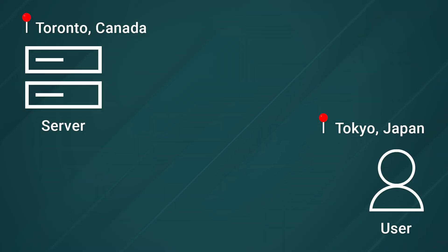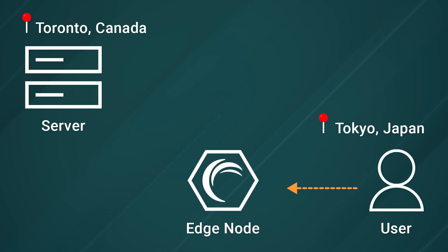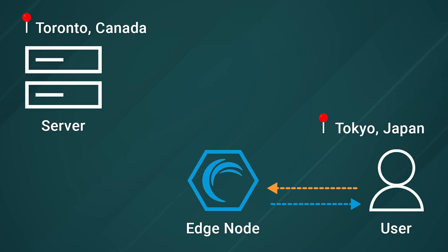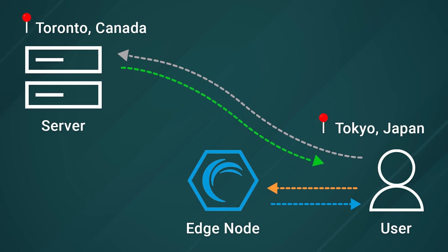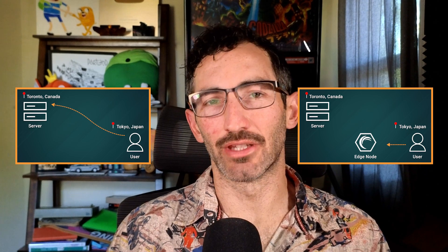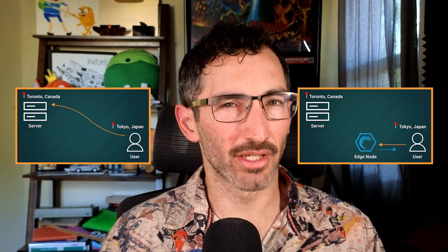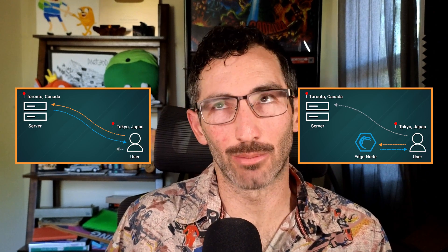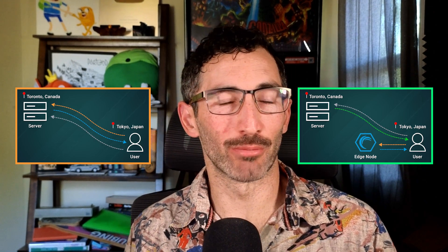Applied to our Tokyo-Toronto example, this would mean that the user's request from their browser in Tokyo would go to the edge node location also in Tokyo, grab the redirect information from there almost immediately, and then go ahead and follow the redirect to the final landing page, which is probably still on that server in Toronto. So as you can see in this example, it wouldn't remove the latency entirely, but it does remove it from one of the two requests that need to be made, cutting the whole latency time roughly in half — which is what a mathematician would call statistically significant.